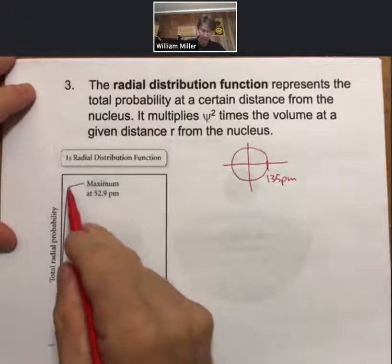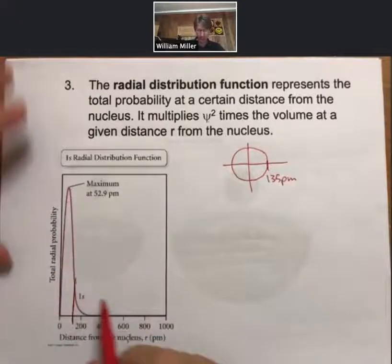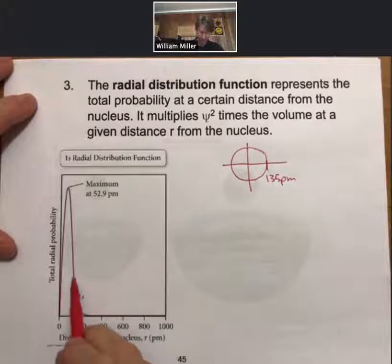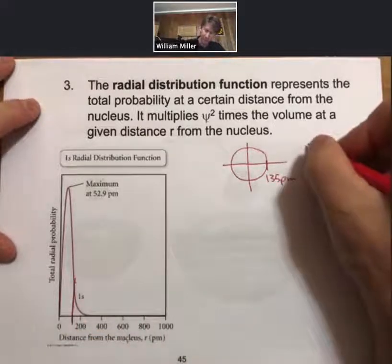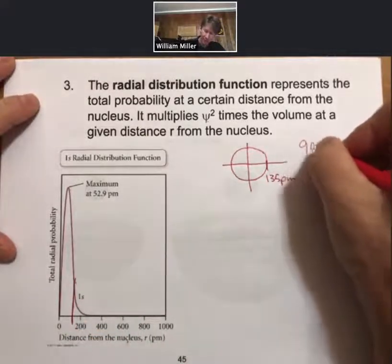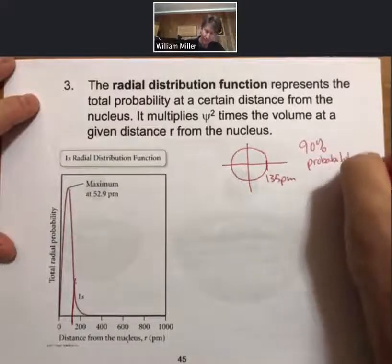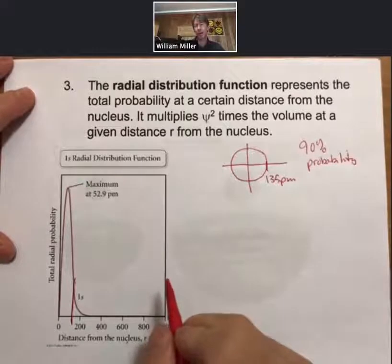Anyway, there's a maximum probability of finding the electron at 52.9 picometers. Then the edge of the orbital, in which we have 90% probability, is approximately 135 picometers.